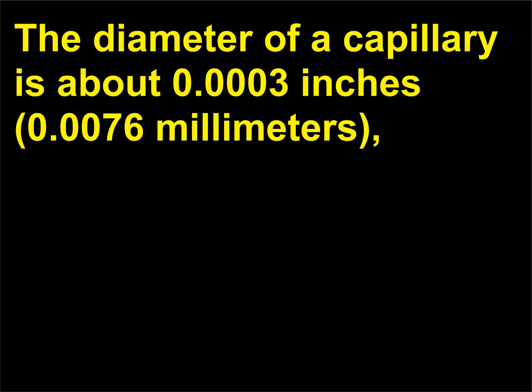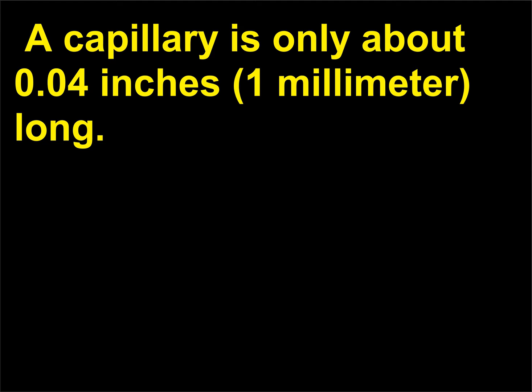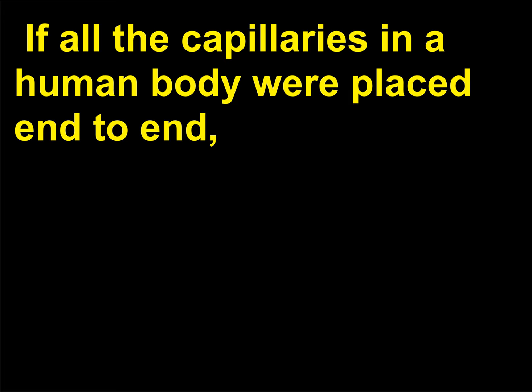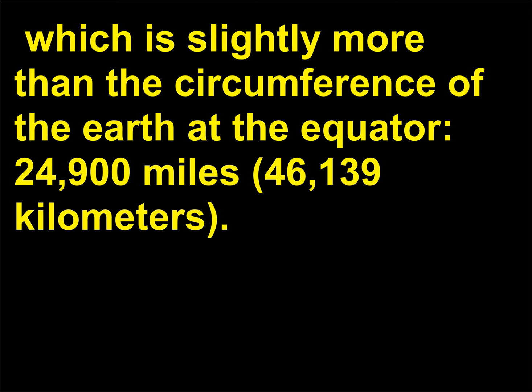The diameter of a capillary is about 0.0003 inches (0.0076 millimeters), which is just about the same as a single red blood cell. A capillary is only about 0.04 inches long. If all the capillaries in a human body were placed end to end, the collective length would be approximately 25,000 miles (46,325 kilometers), which is slightly more than the circumference of the Earth at the equator — 24,900 miles (46,139 kilometers).